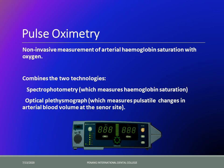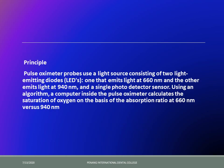Pulse oximetry is the other true vitality test — it is non-invasive and measures hemoglobin saturation of oxygen. It combines two technologies: spectrophotometry, which measures the saturation of hemoglobin in blood, and plethysmography, which measures pulsatile changes in blood volume. It has a light source consisting of two LEDs emitting at different wavelengths — 660 nanometers and 940 nanometers.